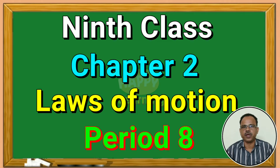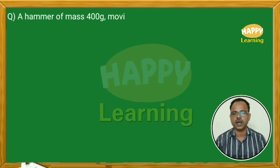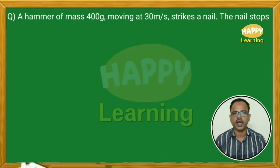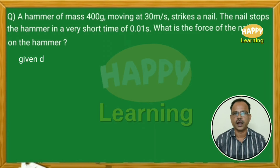Welcome to period 8. A hammer of mass 400 grams moving at 30 meters per second strikes a nail. The nail stops the hammer in a very short time of 0.01 second. What is the force of the nail on the hammer?